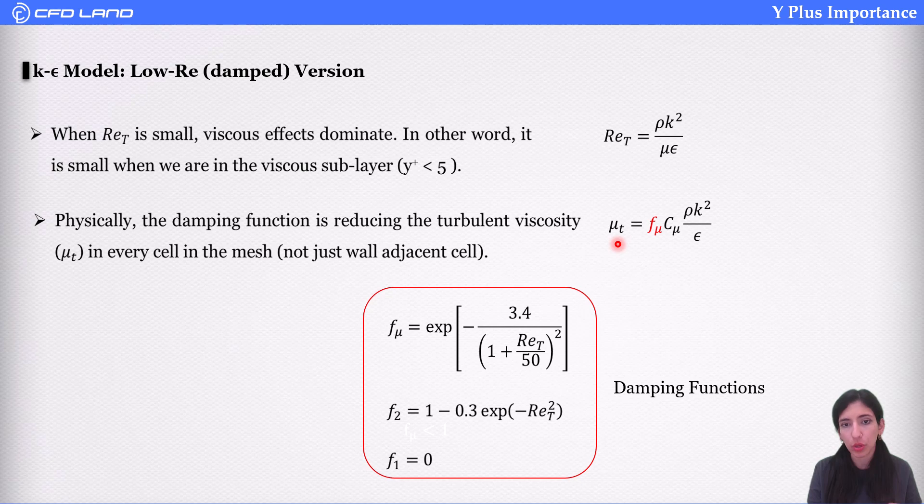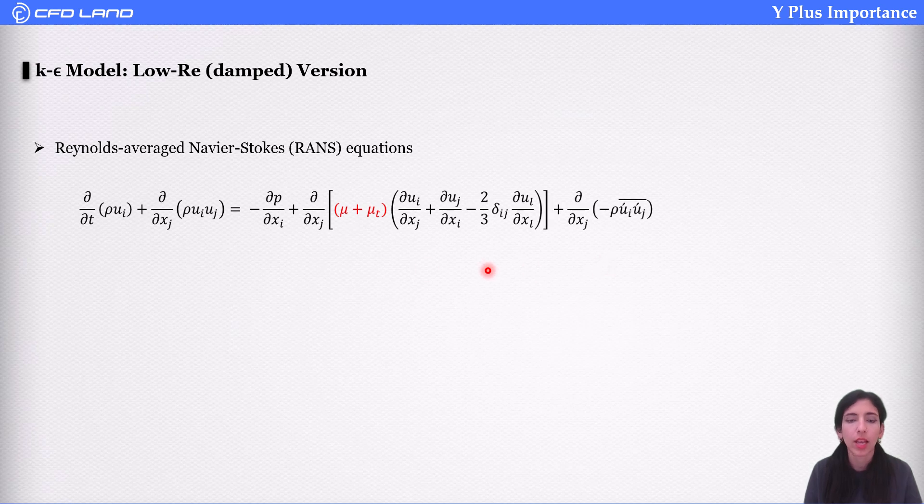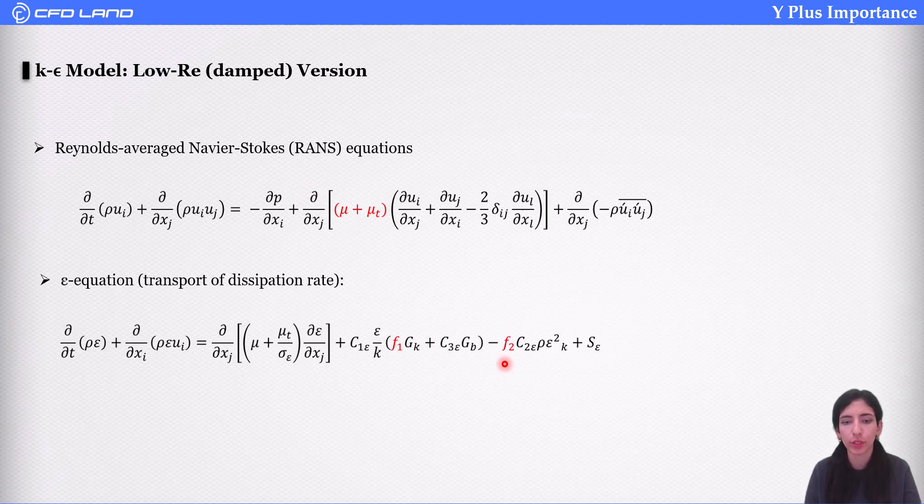As you can see for f_mu, when Reynolds is high, it approaches 1. And when it is low, near the wall, it approaches to a value less than 1. And f_mu is multiplied into the equation for mu_t. So, it reduces eddy viscosity. As you can see, in the equation, when mu_t reduces, laminar viscosity dominates the diffusion term. And f_1 and f_2 are used accordingly for C_1 and C_2 in epsilon equation.